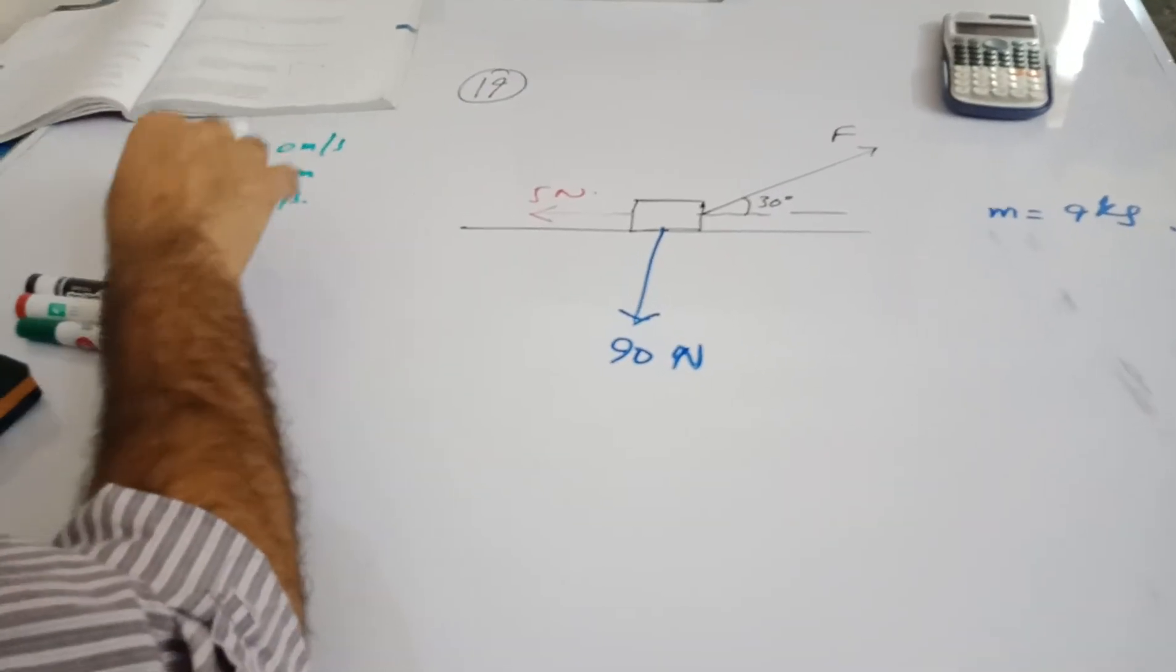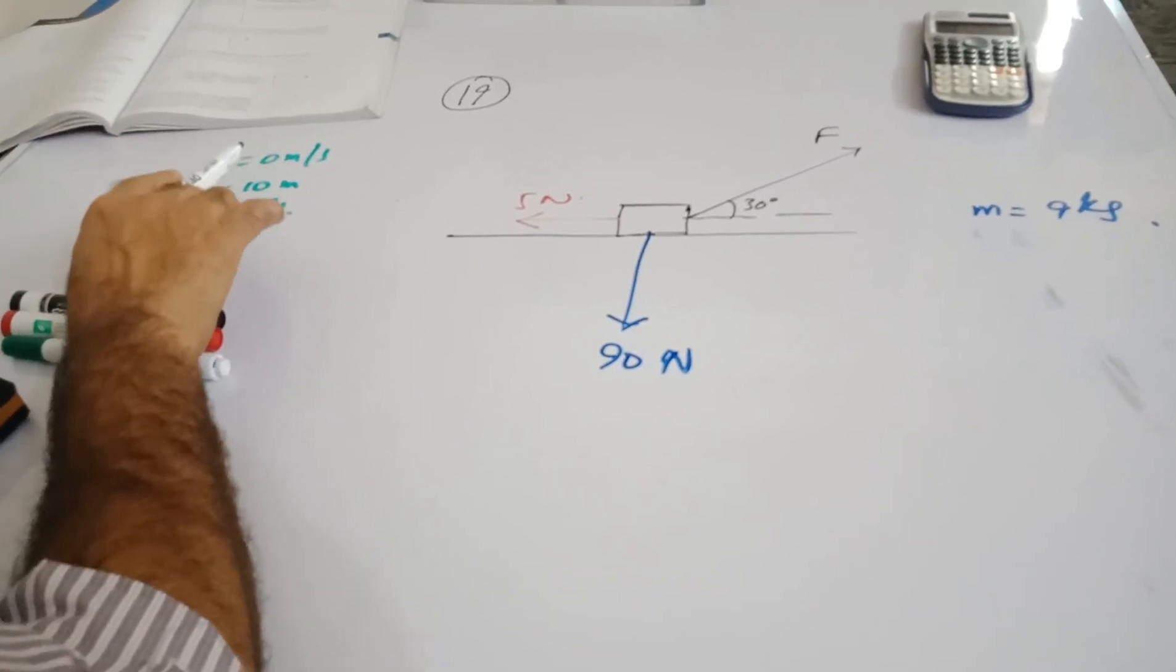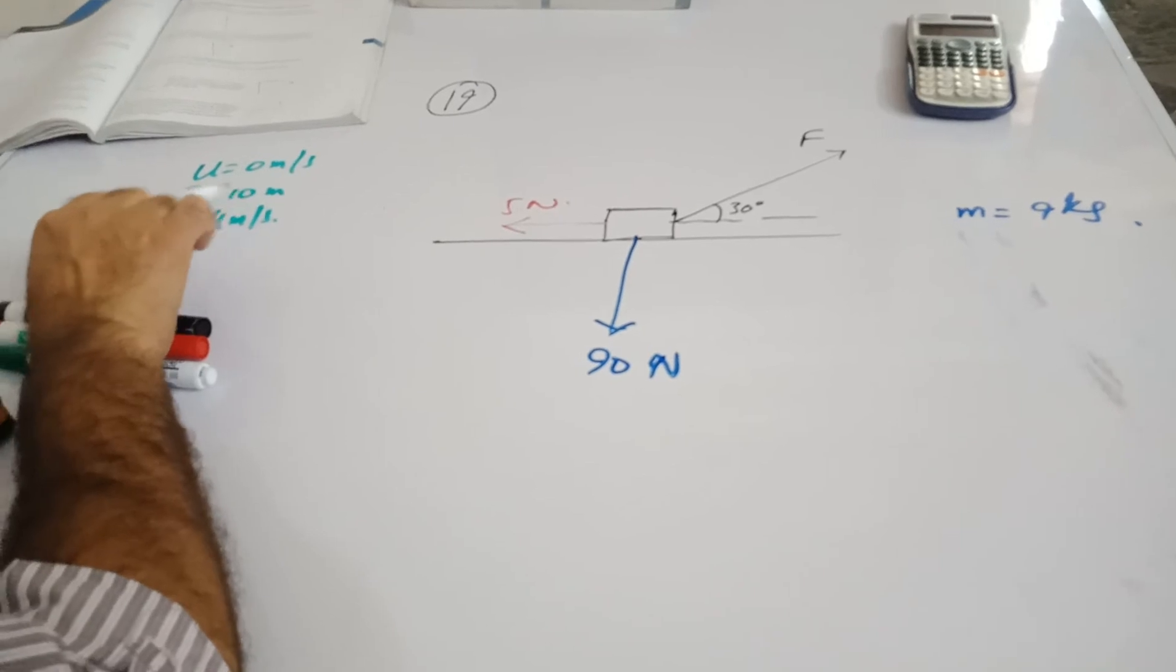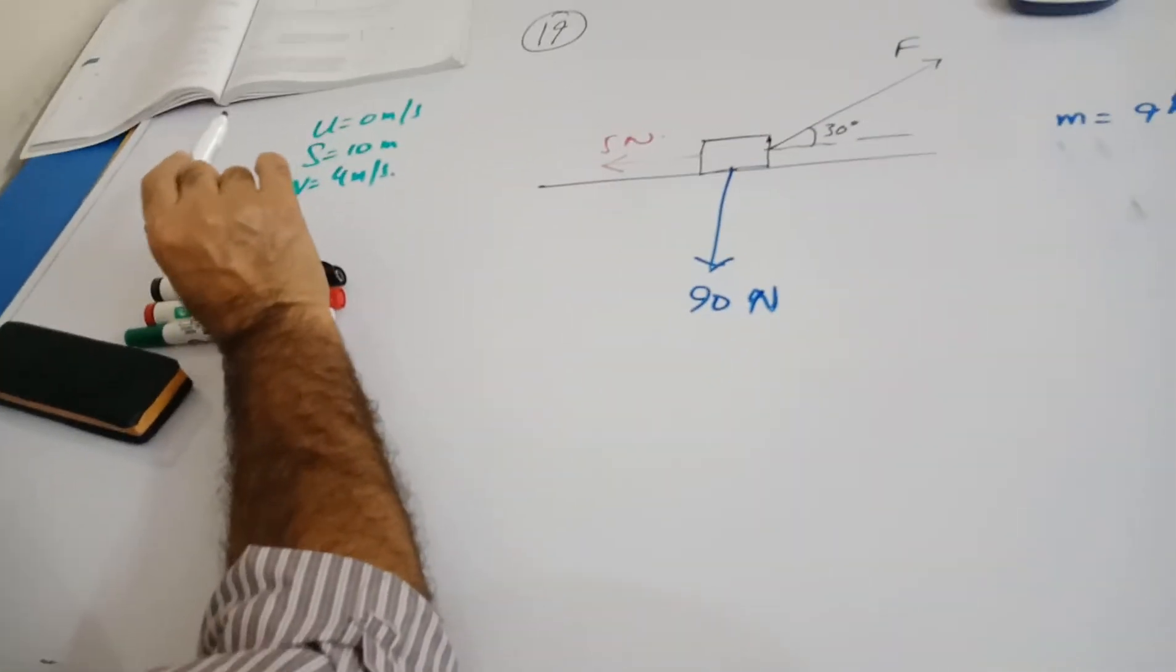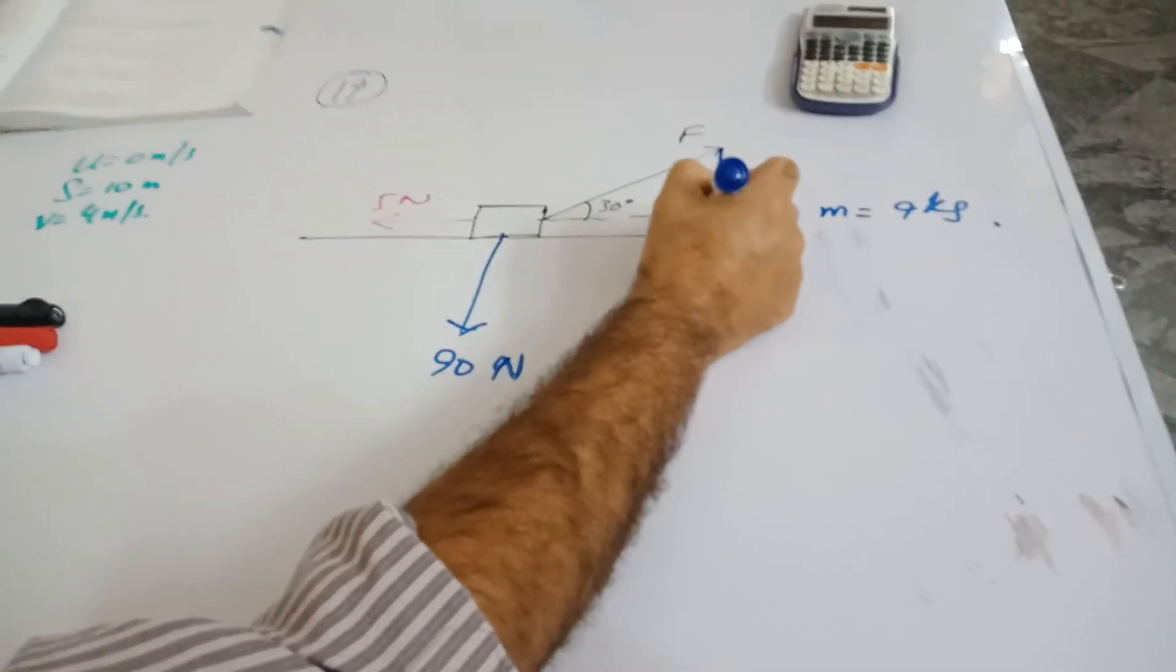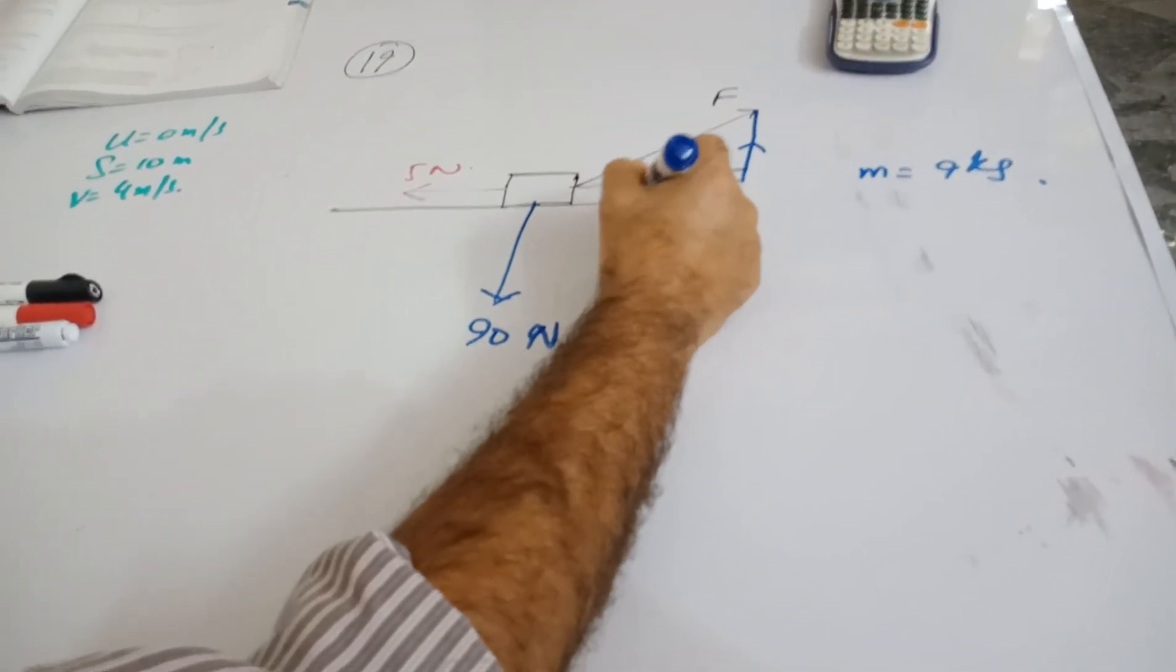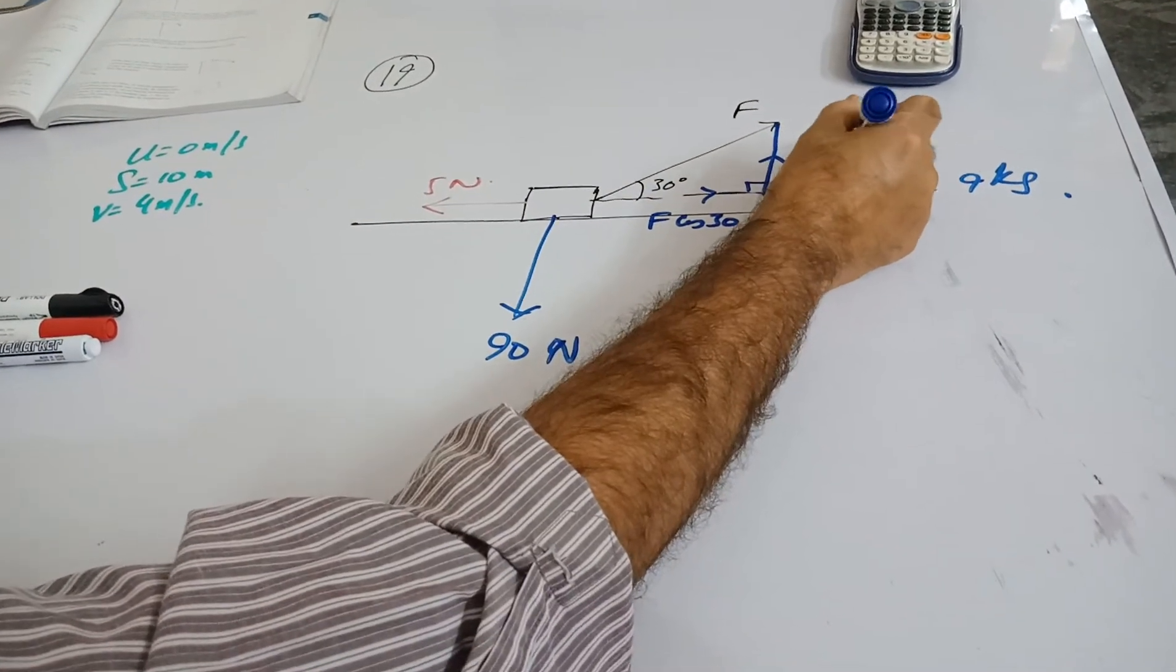It reaches a speed of 4 meters per second in 10 meters. So the distance is 10 meters. We're saying find the size of the force F. Again, it is always your first step to resolve the force or the forces which are not in the direction of the motion.